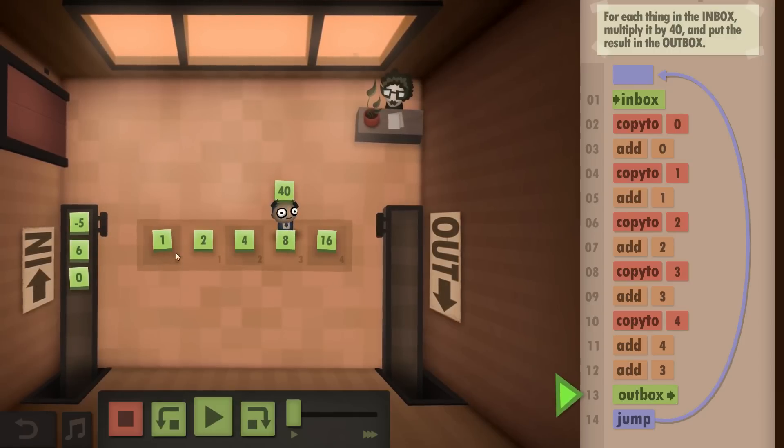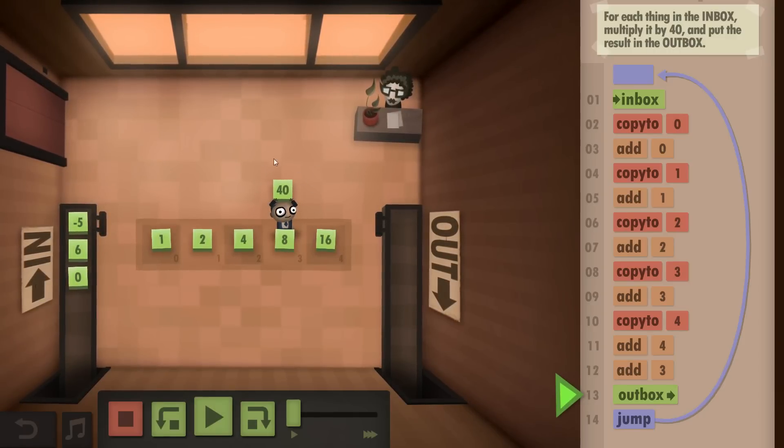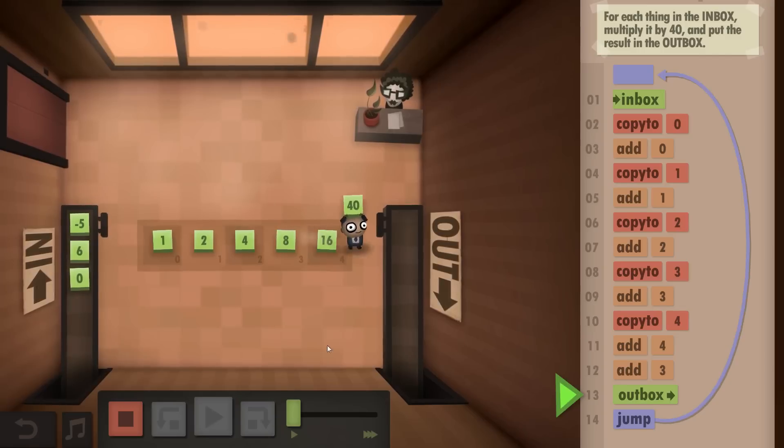Luckily we started with the 1 in this case, so we can immediately see that times 40 is correct, and then we put that to the outbox.